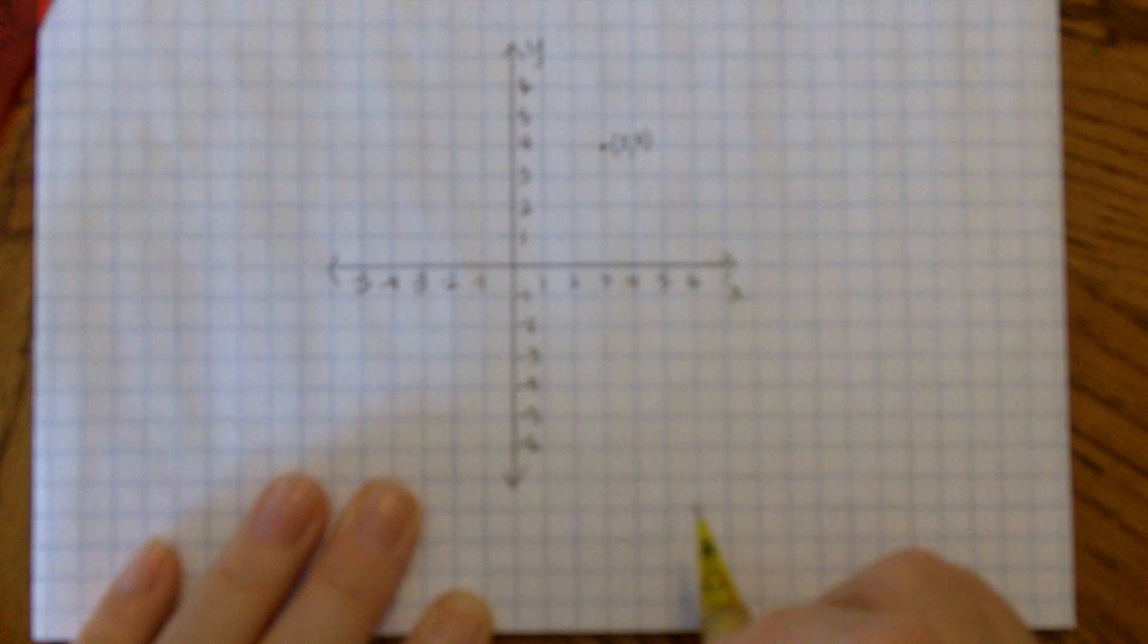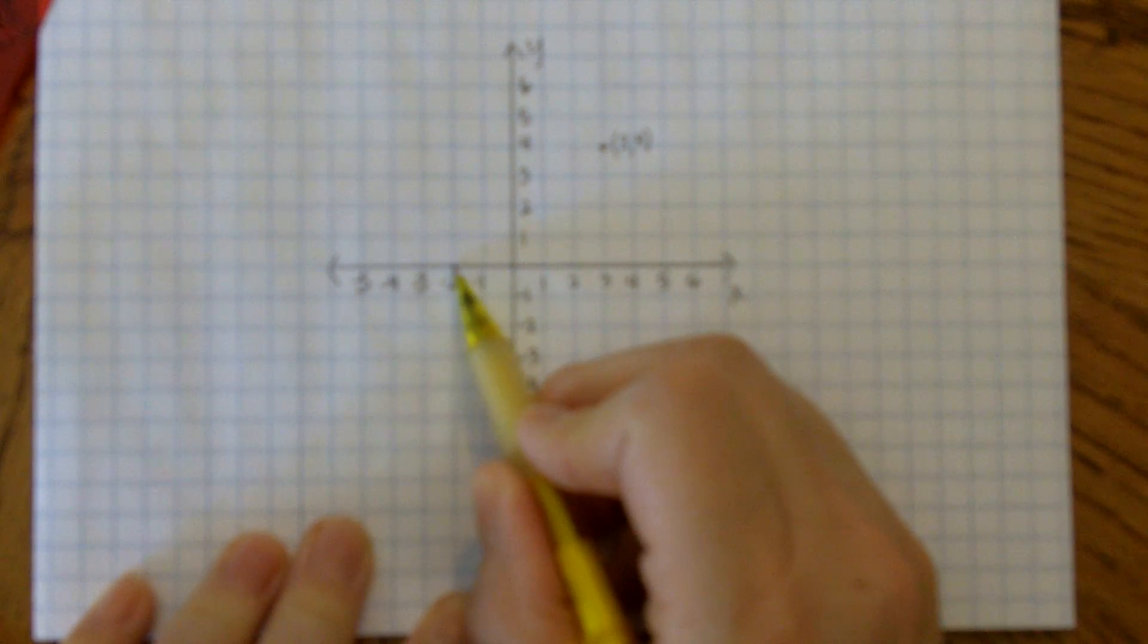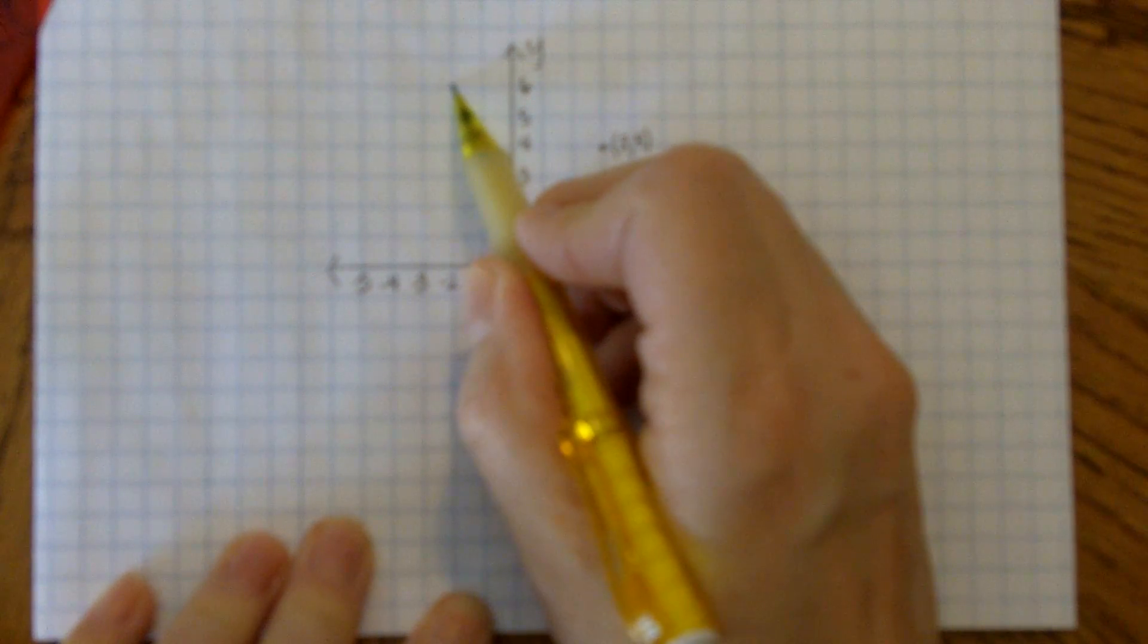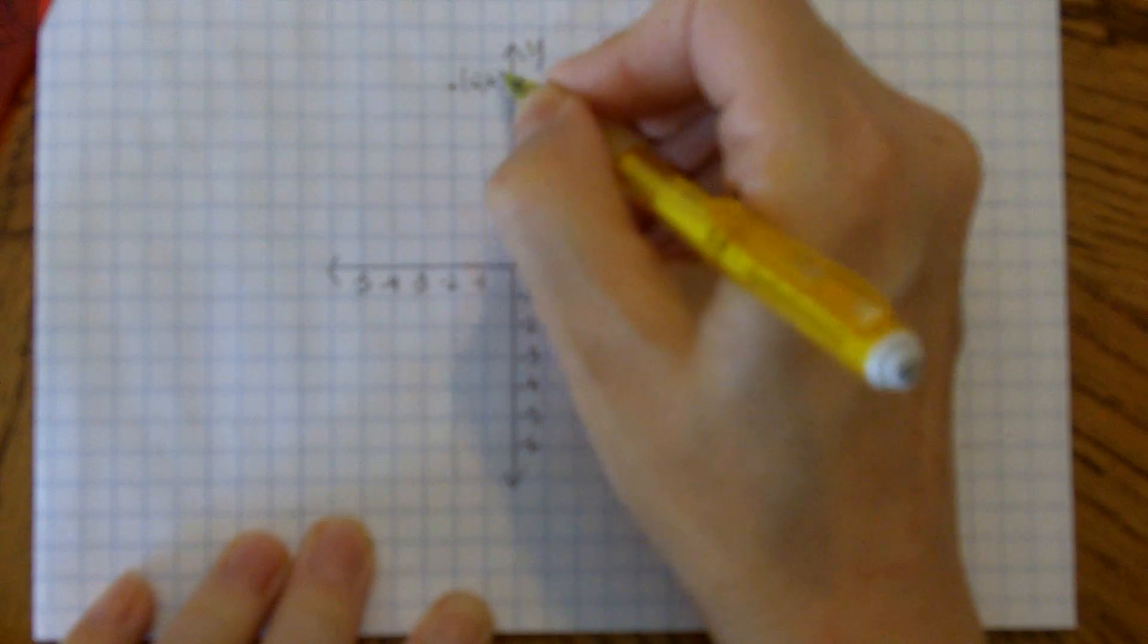My next one is going to be negative 2, 6. Start at the origin, go two spaces to the left, and six spaces up. And write its ordered pair near it somehow.